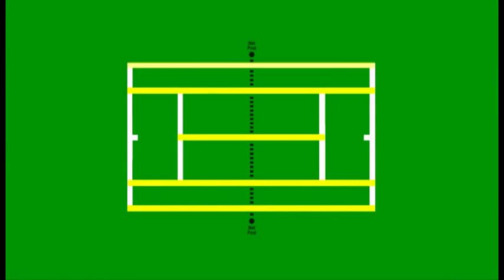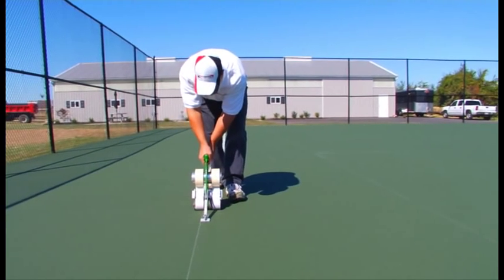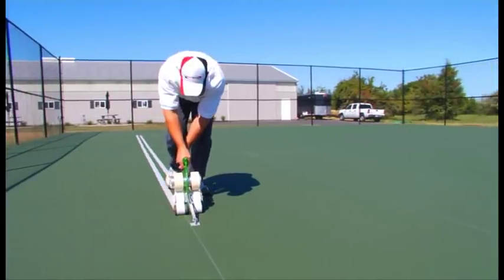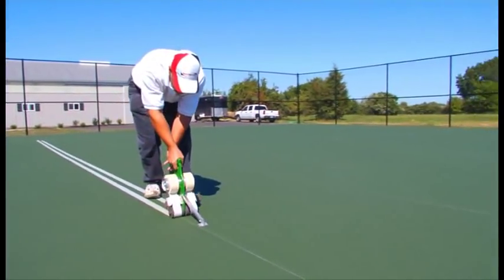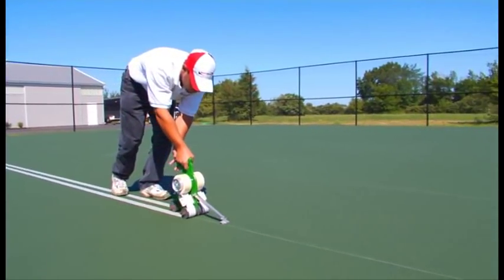We will start with the long lines first, which are the side, alley, and center service lines. These lines will all be two inches in width. Begin by taping the left and right side lines. The outside of the playing box area will be the outside of each side line.